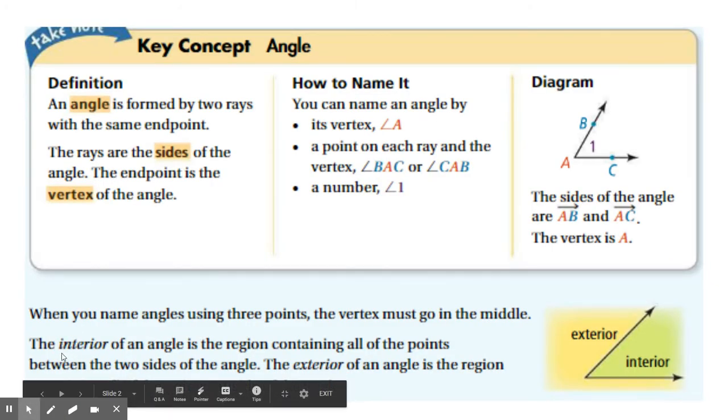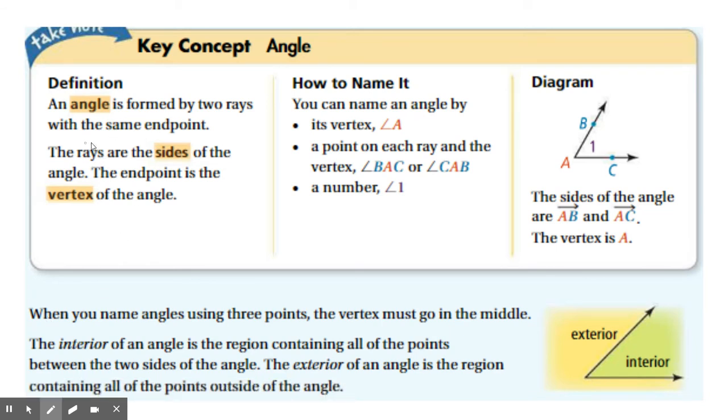Alright, so here is what an angle is. So an angle is formed by two rays with the same endpoint. Again, same endpoint. The rays are the sides of the angle, and that same endpoint is called the vertex.